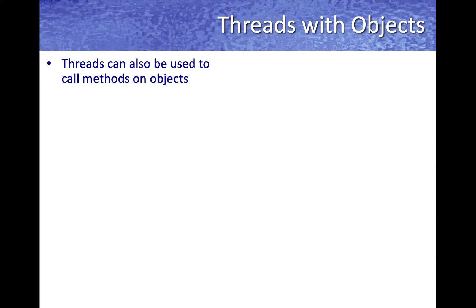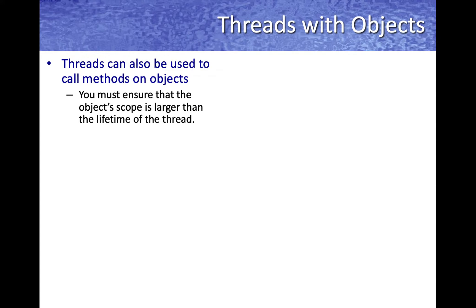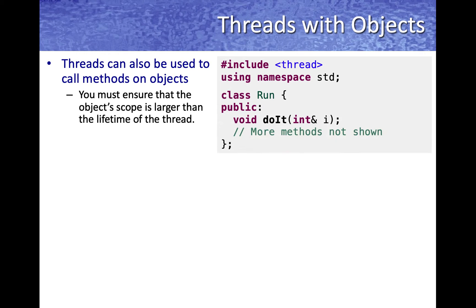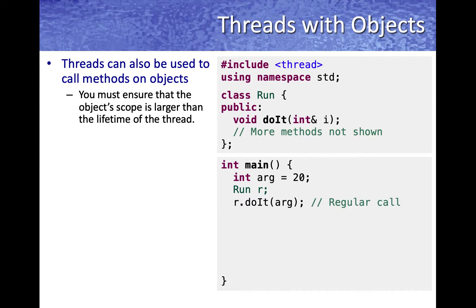Threads can also be used to call methods on objects. The key is to ensure that the object's scope on which the method is being called is larger than the lifetime of the thread, so that the object is not accidentally deleted while the thread is actually running. For example, consider a class called Run which has a public method called do_it taking some parameter by reference. In the main method, you would create an argument to be passed and an object called r to use for calling a thread. Normally you would call the method as r.doit with an argument.